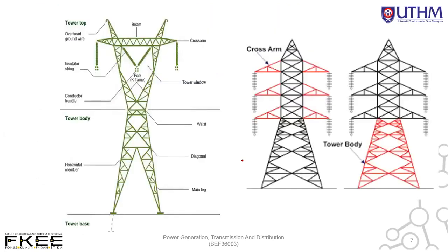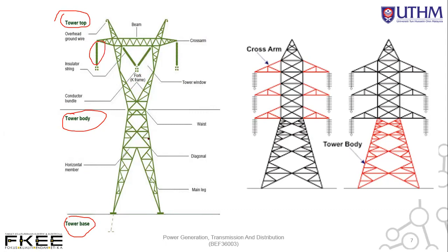This is an example of the tower. An overhead transmission line tower consists of the tower top, tower body, and tower base. In the tower top, there is an overhead ground wire, beam, cross arm, tower window, fork (K-frame), conductor bundle, and also the insulator string. In the tower body there is a waist, diagonal, main leg, and horizontal member.